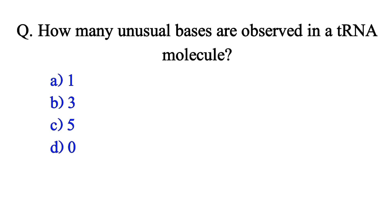How many unusual bases are observed in a transfer RNA molecule? Option A: 1. Option B: 3. Option C: 5. Option D: 0. The correct answer is Option C: 5.